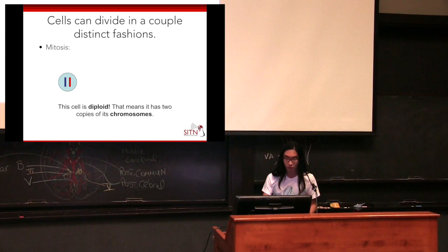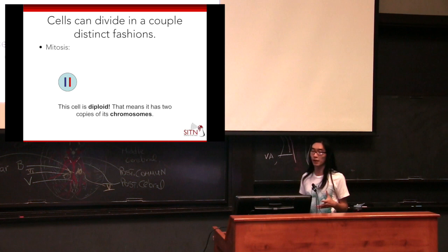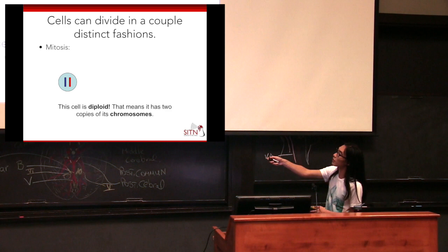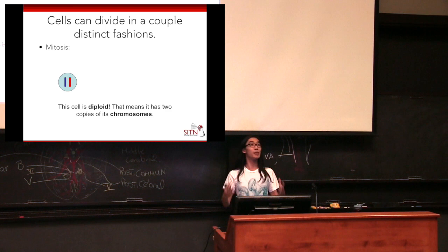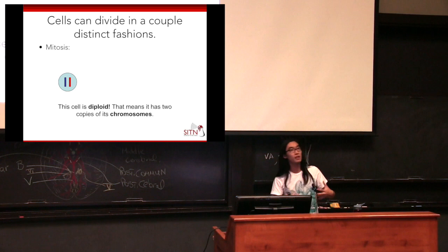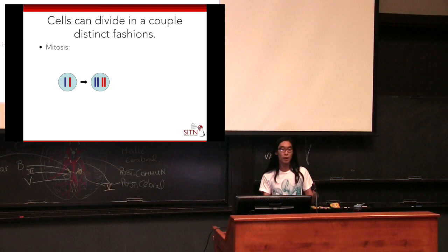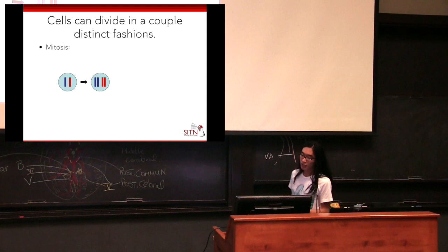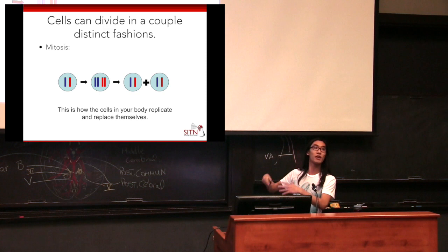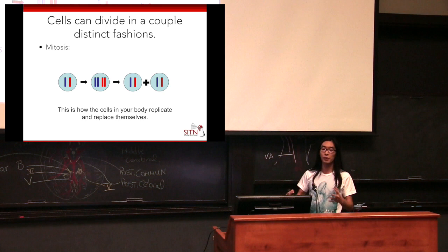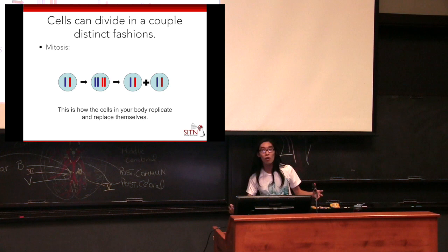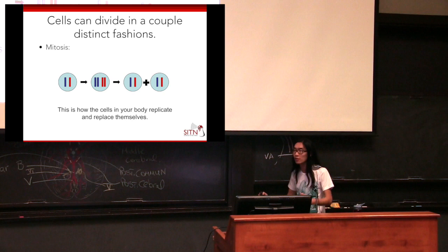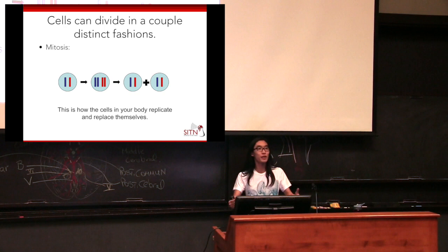Cells can divide in a couple of distinct fashions. One of them is mitosis. I have a cartoon of a cell with two copies of its one chromosome — it's diploid, meaning it has two copies of all its genetic information. We're all diploid; this is the natural state of the vast majority of cells in your body. When a diploid cell wants to replicate and stay diploid, it duplicates all its genetic information, then splits — and now we get two copies identical to the first. This is how we all grow: you can get bigger by getting more cells through mitosis.